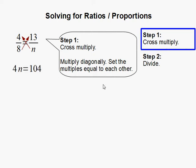Then we set the multiples equal to each other. 4 times n is 4n and we set it equal to 8 times 13 which is 104.